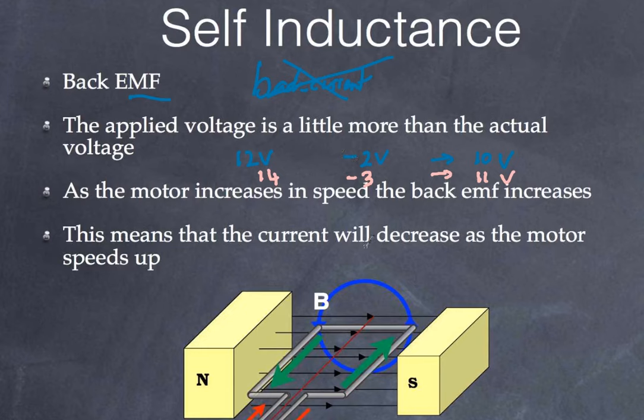The current will decrease as the motor speeds up as a result. Now what does that mean? Well the current is determined by this value over here. That's really important. So as a result the current decreases.